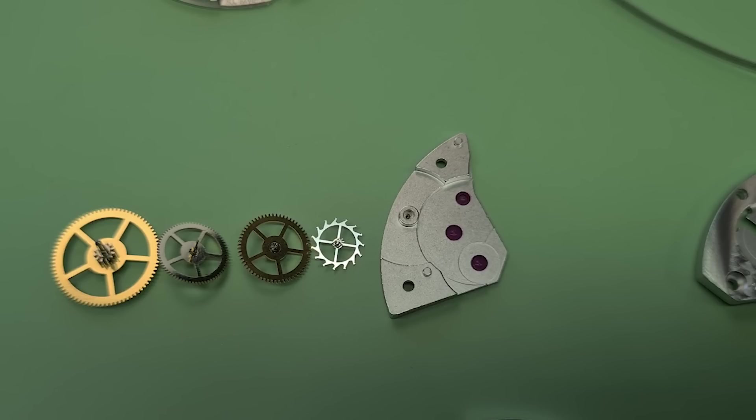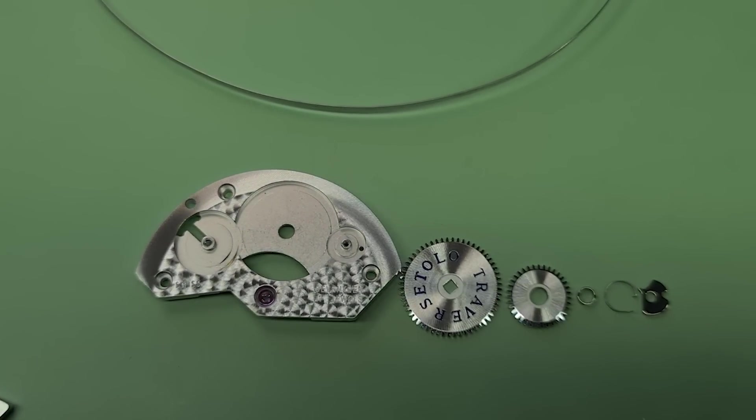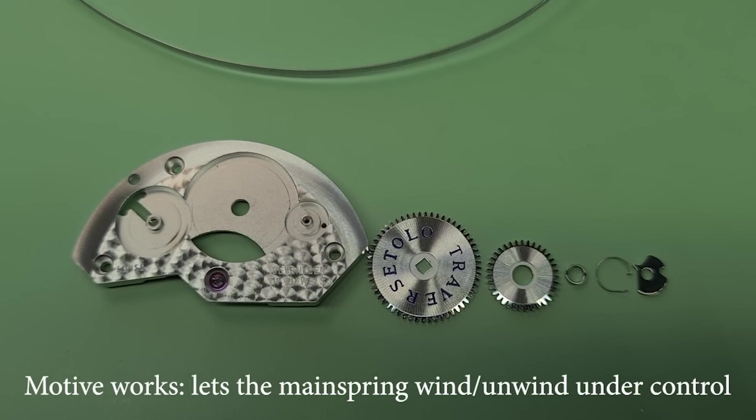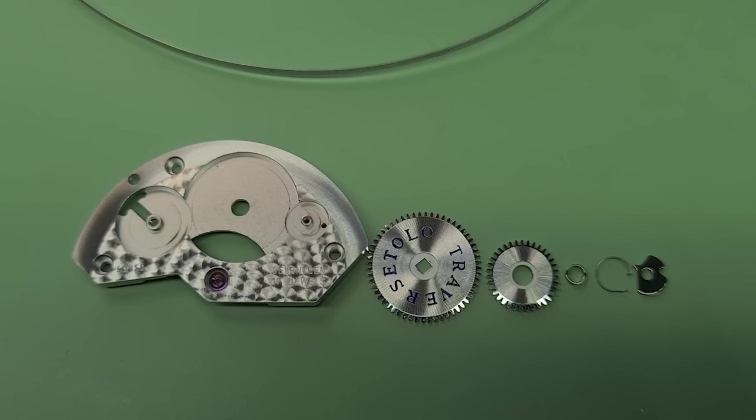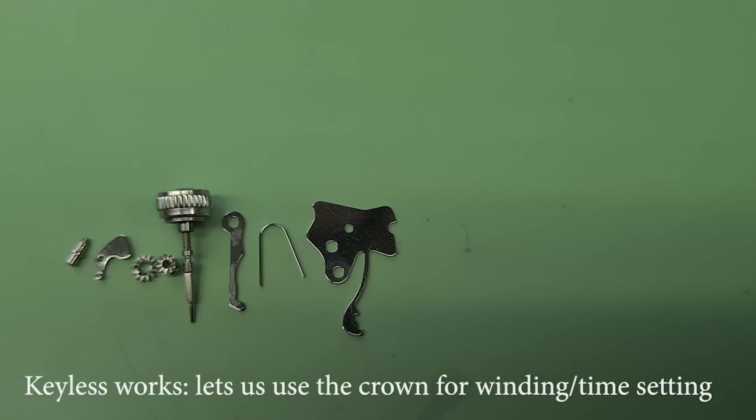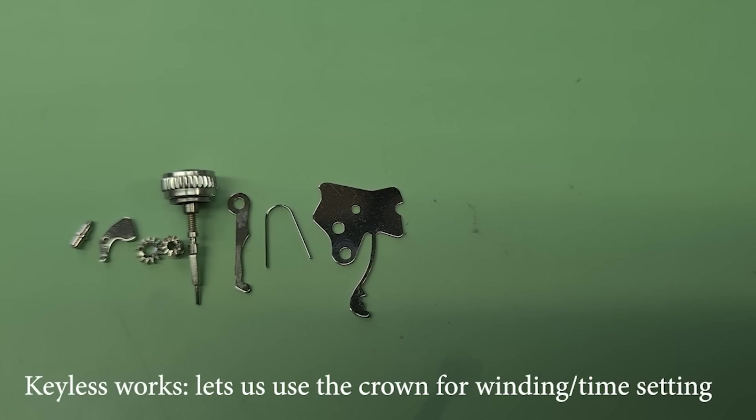And to help keep all these wheels in place, we have the train bridge there with the jewels in it. Now, all the gears in the train will not run unless we wind the mainspring, and we have some components needed on both sides of the main plate for doing that, including the crown and stem, of course.